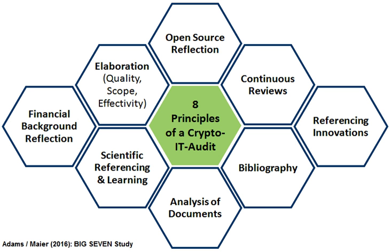Installing controls are necessary but not sufficient to provide adequate security. People responsible for security must consider if the controls are installed as intended, if they are effective, or if any breach in security has occurred and if so, what actions can be done to prevent future breaches. These inquiries must be answered by independent and unbiased observers performing the task of information systems auditing. In an information systems environment, an audit is an examination of information systems, their inputs, outputs, and processing. IT audits are used to evaluate the organization's ability to protect its information assets and to properly dispense information to authorized parties.